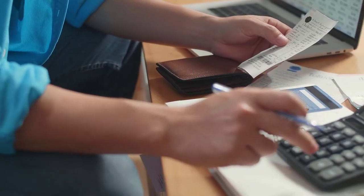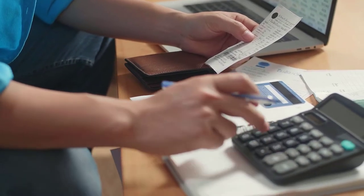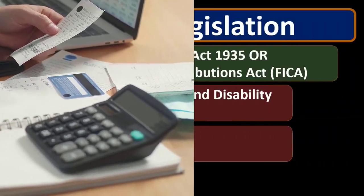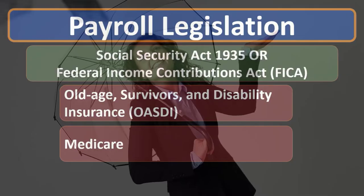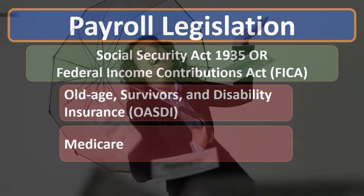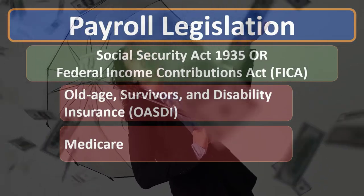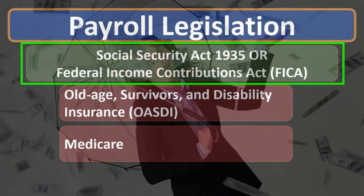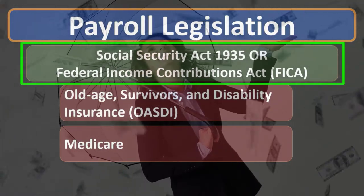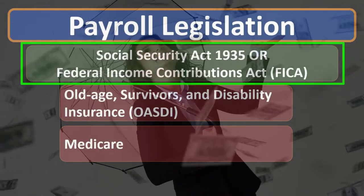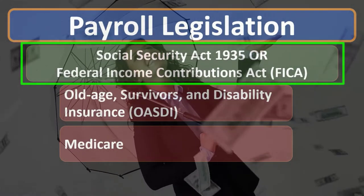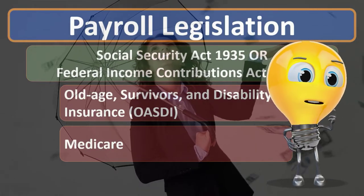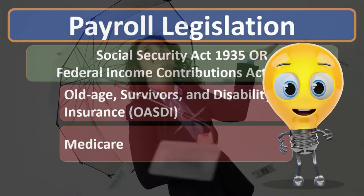FICA is another law that happened in the 1930s during the Great Depression, when we had a lot of legislation aimed at making things better. In this case we have the Social Security Act, otherwise known as the Federal Income Contributions Act or FICA, which can be confusing because it really has two major components to it.